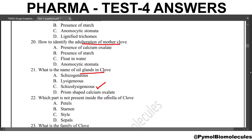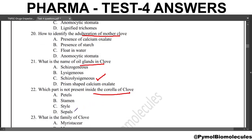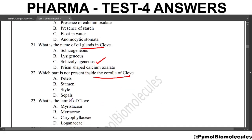Next question: which part is not present inside the corolla of clove? The answer is sepals. What is the family of clove? The answer is Myrtaceae. Also note that Myrtaceae is for nutmeg.